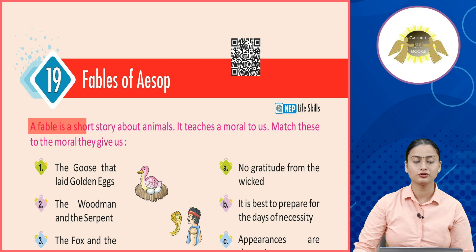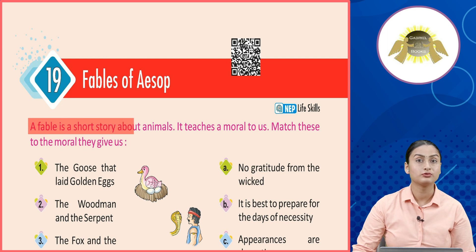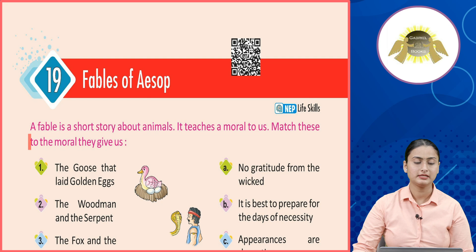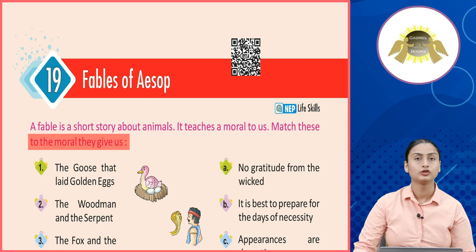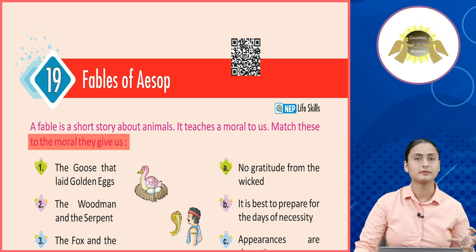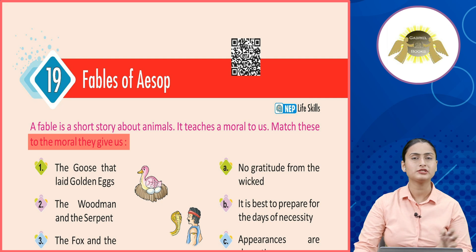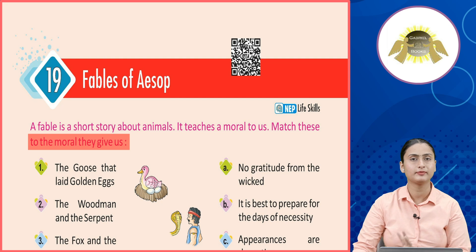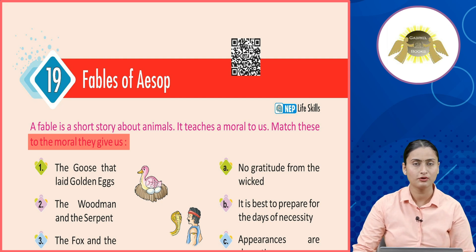A fable is a short story about animals. It teaches a moral to us. Match these to the moral they give us. Toh aapke saamne kuch stories ke naam diye gaye hain aur right hand side pe unke morals hain. Hame unko match karna hai.